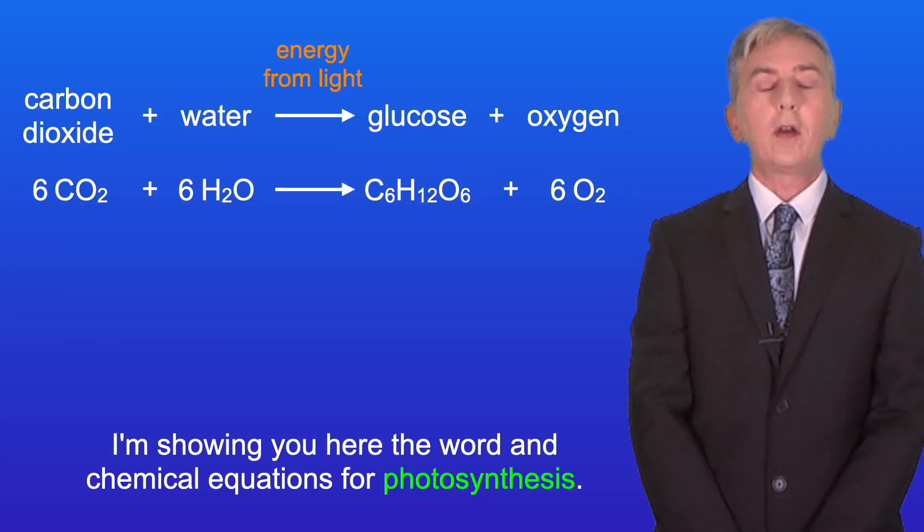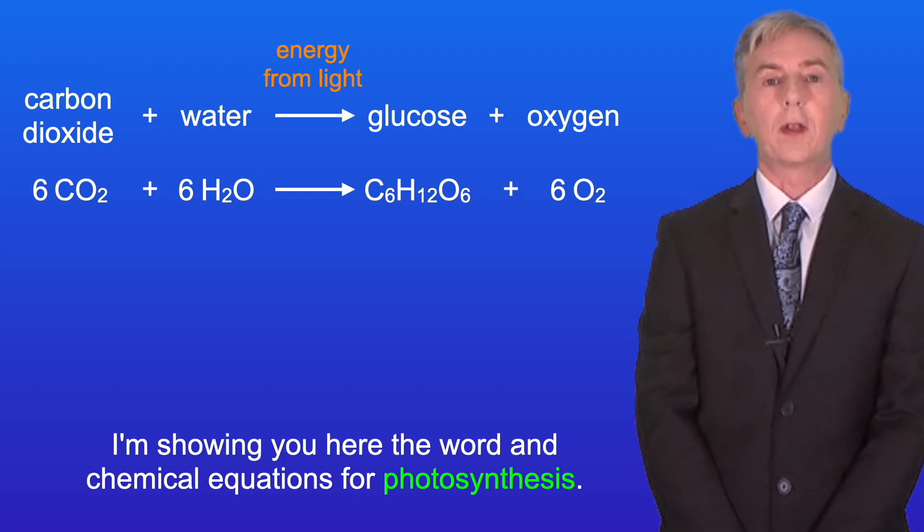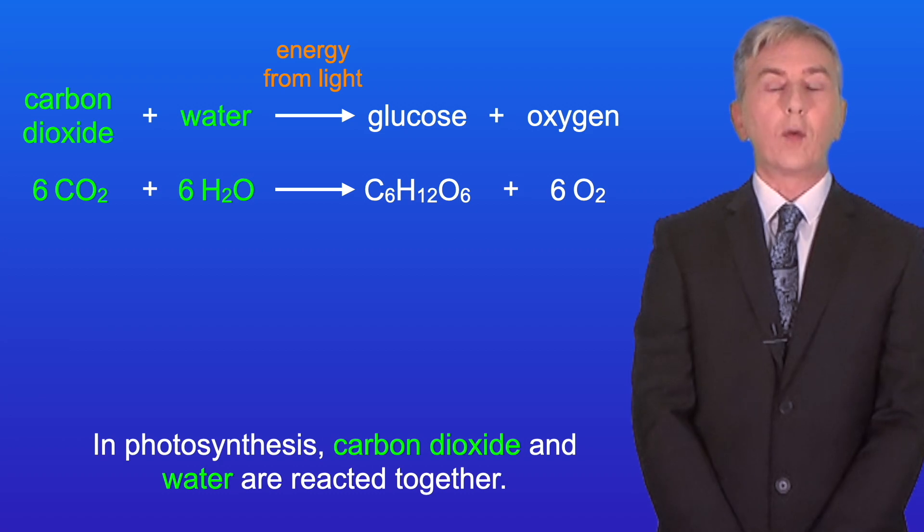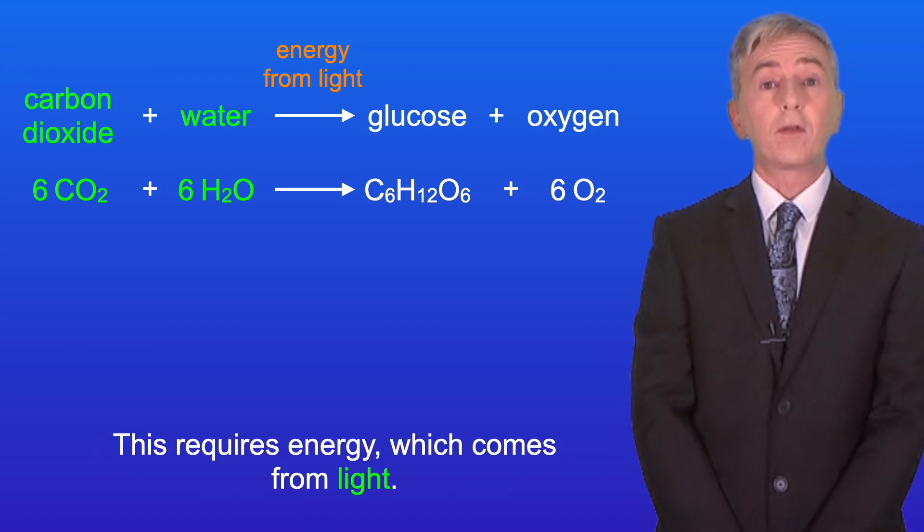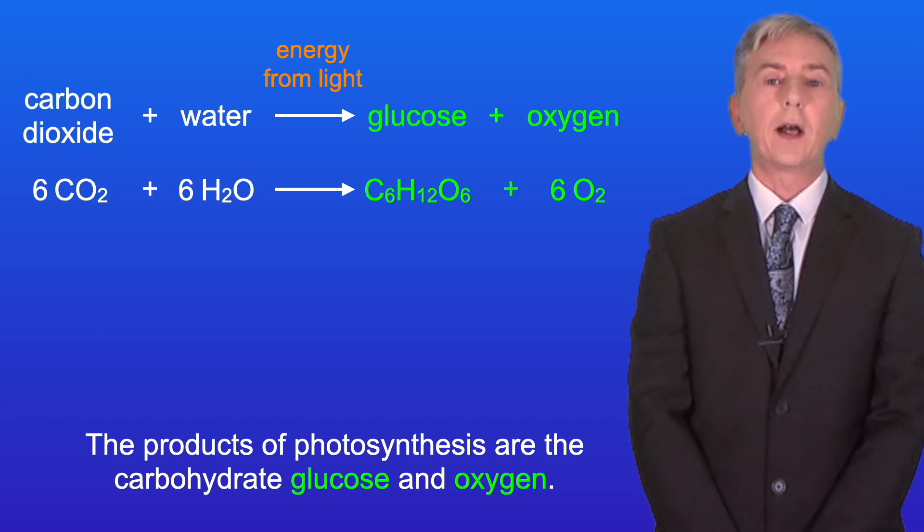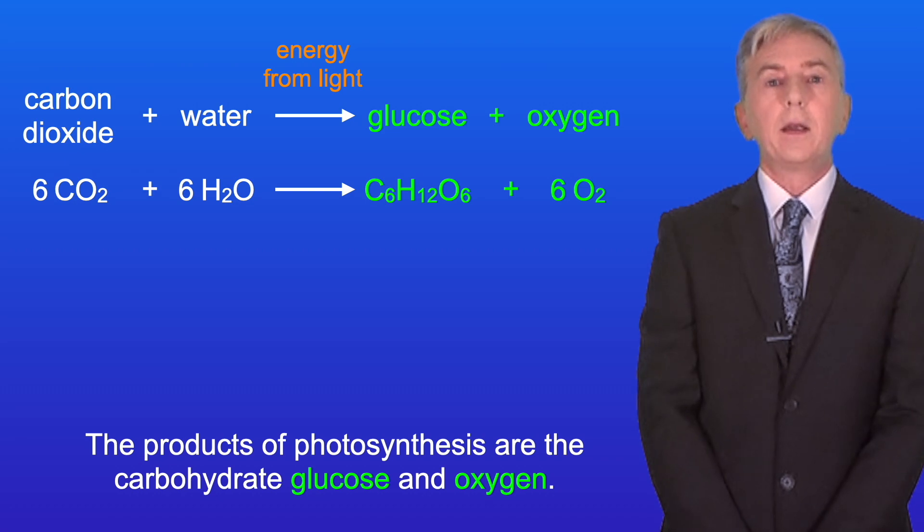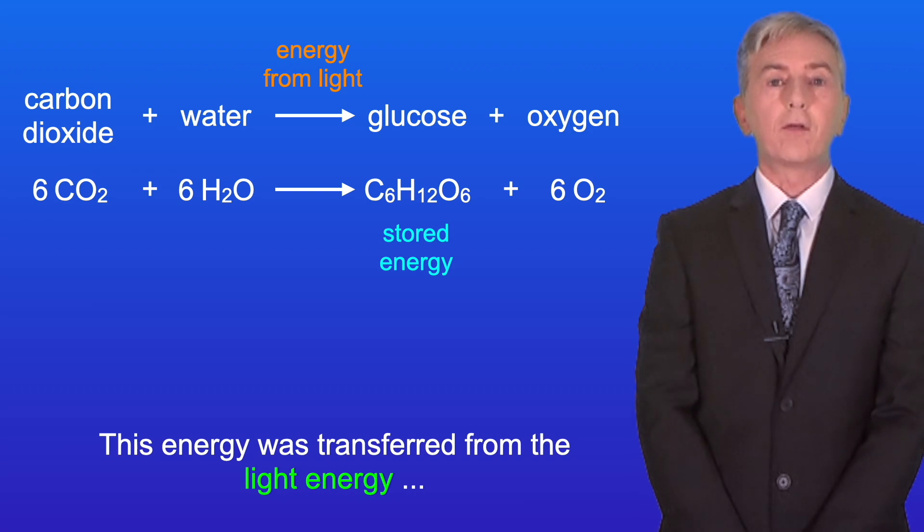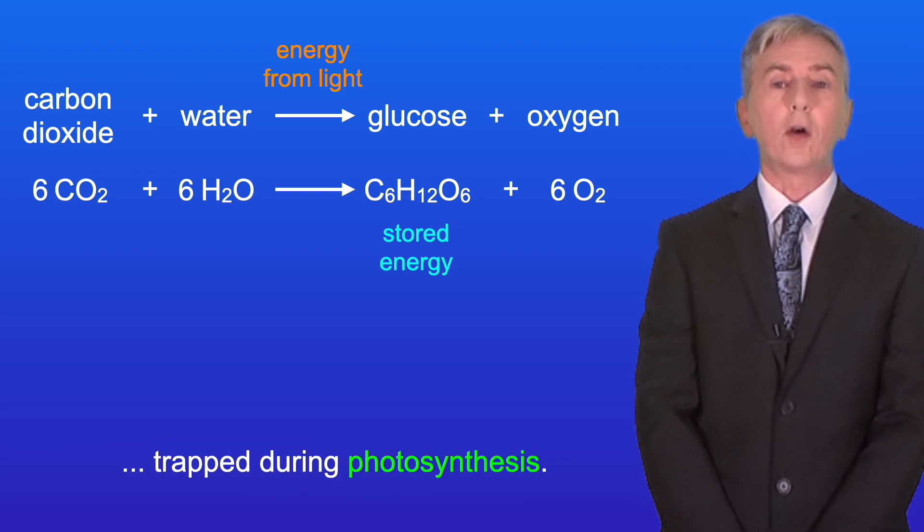Okay, I'm showing you here the word and chemical equations for photosynthesis. In photosynthesis, carbon dioxide and water are reacted together. This requires energy which comes from light. The products of photosynthesis are the carbohydrate glucose and oxygen. Now the chemical bonds in glucose contain a great deal of stored energy, and this energy was transferred from the light energy trapped during photosynthesis.